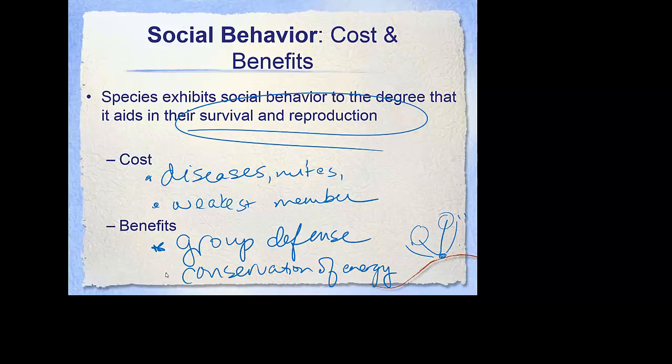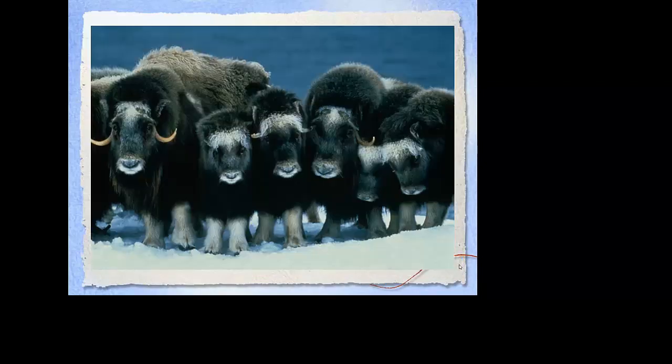Warmth in the wintertime — penguins huddle together to stay warm. But are you going to mess with something that looks like this? This is a population of musk ox. They put all the babies behind, hidden behind the large adults to protect them. If you come face to face with this population, you certainly are not going to mess with the babies or any of them.